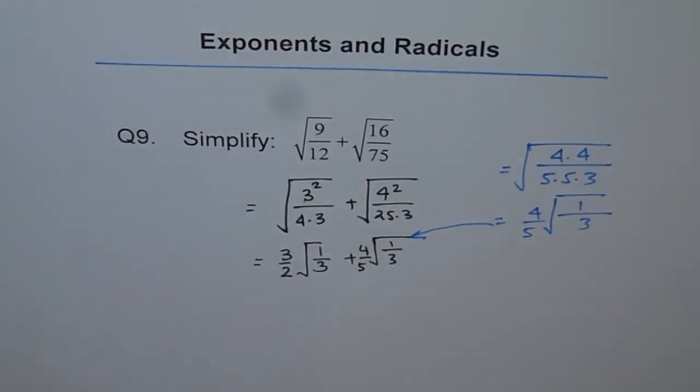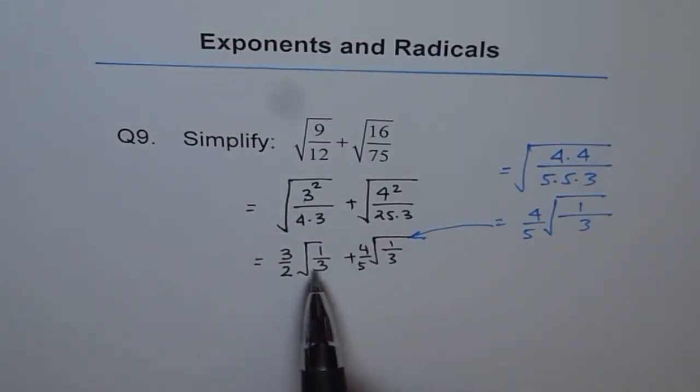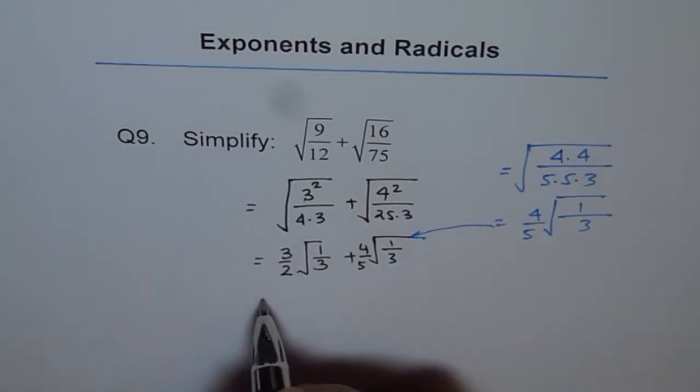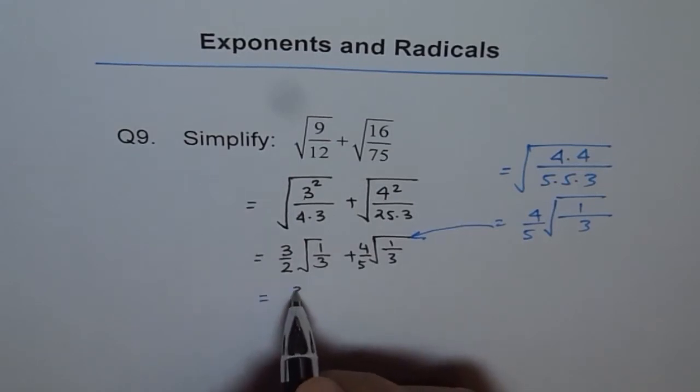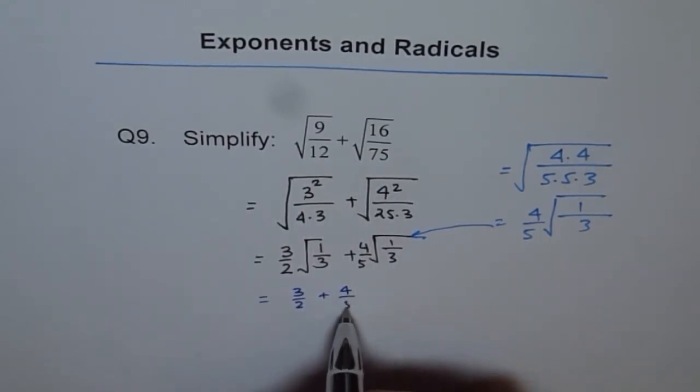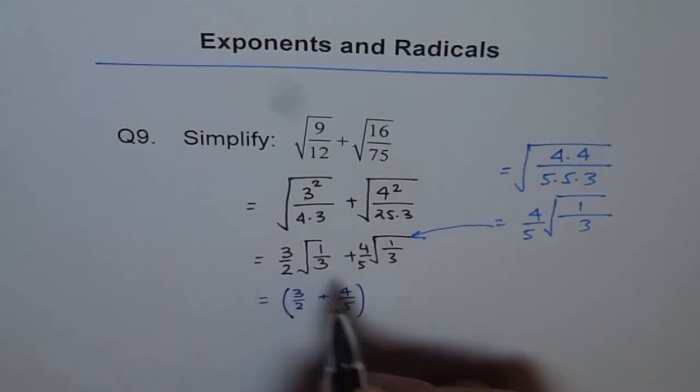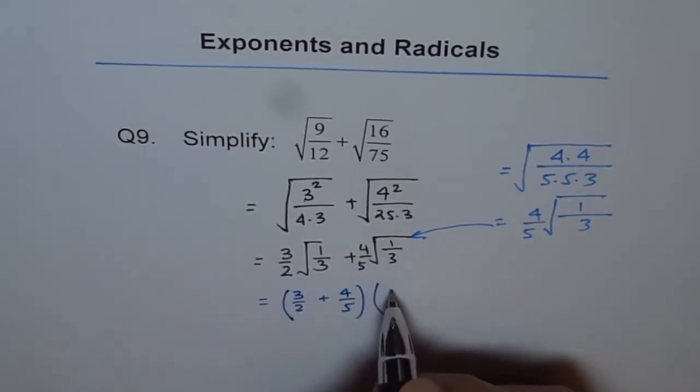Now, we have, you see these like terms? Like terms, like take 1 over square root 3 as an apple. So we have 2 like terms, which can be combined. So we have 3 over 2 plus 4 over 5 can be added up now because they have a like term.